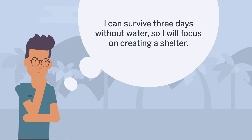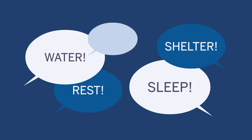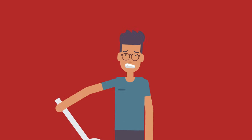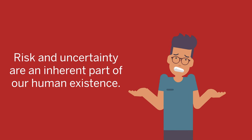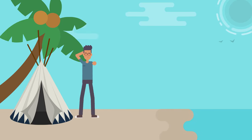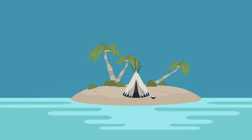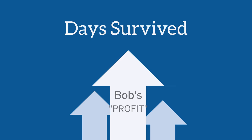Bob may decide that he can survive three days without water, and so focuses instead on creating a shelter for the night. Another person in this situation may choose differently, but it is Bob's individual judgment that guides the choices he makes. Bob's decision may not be the right one. Risk and uncertainty are an inherent part of our human existence. Perhaps Bob ends up spending so much time building a shelter that he does not give himself enough time to find water when he desperately needs it. Bob's decision affects the number of days he can survive on the island. In this case, his profit is measured in terms of the number of days he is able to live, having made this choice. A loss could be his death.